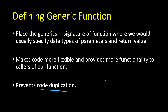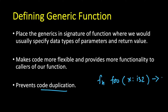So when we define a normal function, we write 'fn', then the function name, then some parameters and their type — let's say i32 — and then we specify the return type, let's say i32, and then we define the function body.